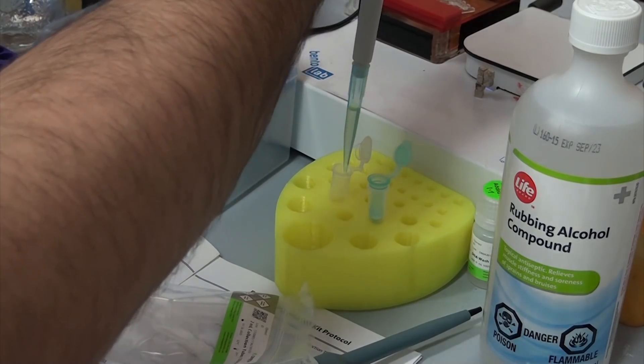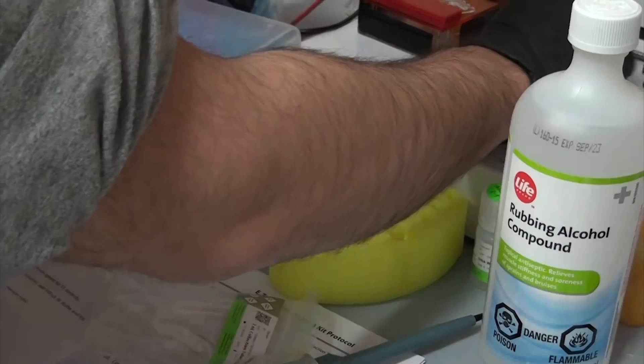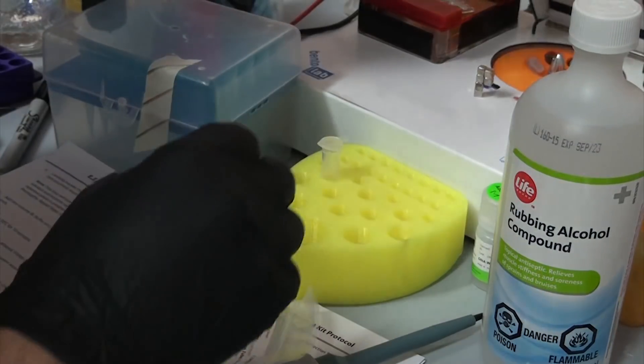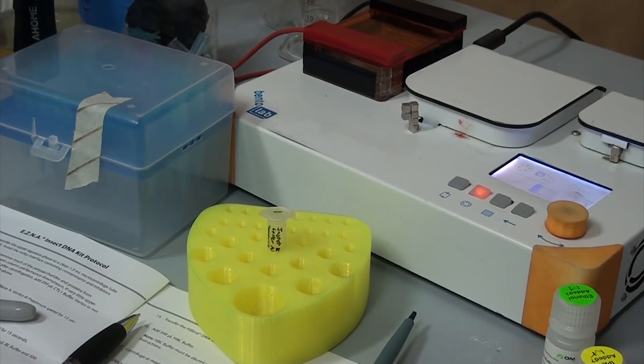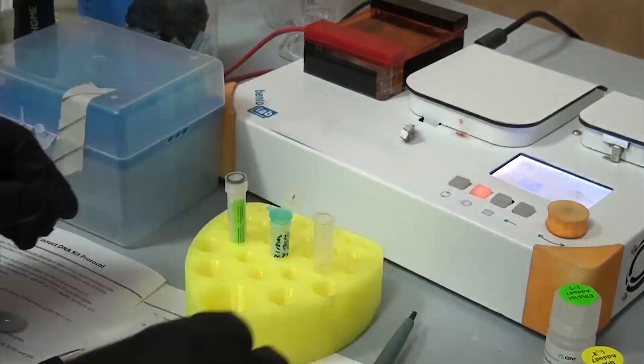However in this case, the kit says their filters are resin based, not silica based, which I thought was interesting. After spinning that down, it's onto a series of washes with the provided wash buffer. And finally, after all that, we can dry the column by spinning it empty for a few minutes, transfer it to a final collection tube, and elute our DNA. Again, letting it rehydrate for a few minutes beforehand.